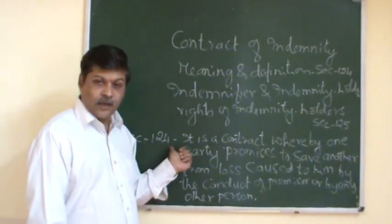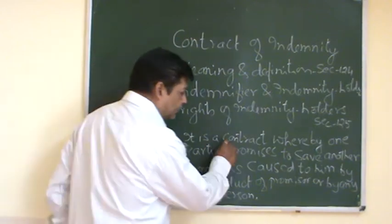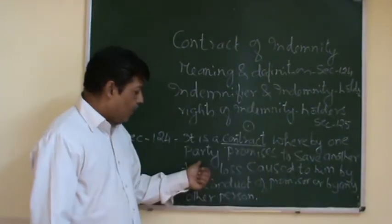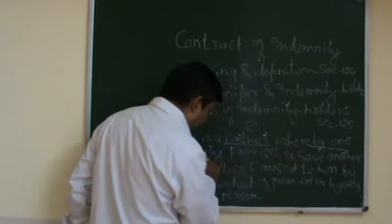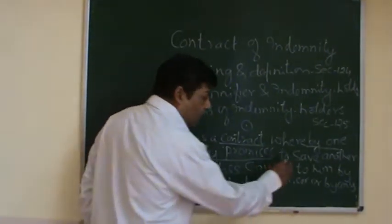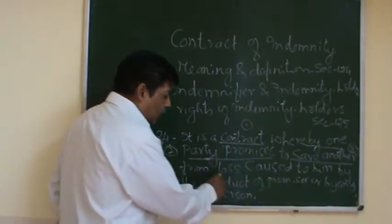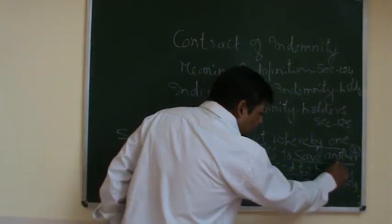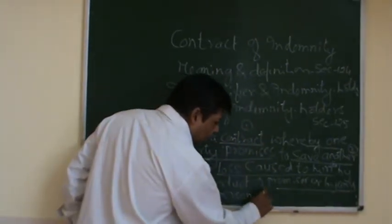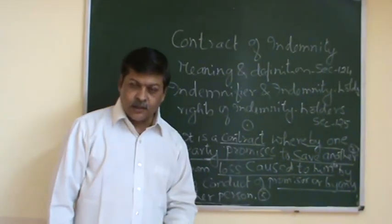The definition is given in section 124. It is a contract whereby one party — that is the second ingredient — promises to save another — the third ingredient — from loss caused to him — the fourth — by the conduct of the promisor or any other person. So totally you have five elements to understand the contract of indemnity.